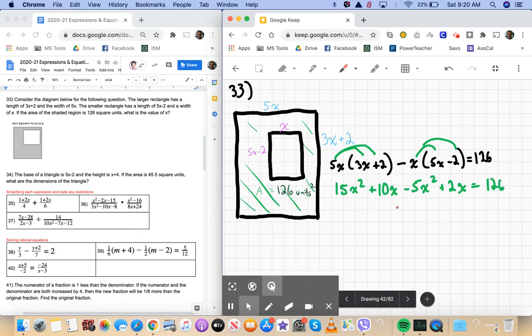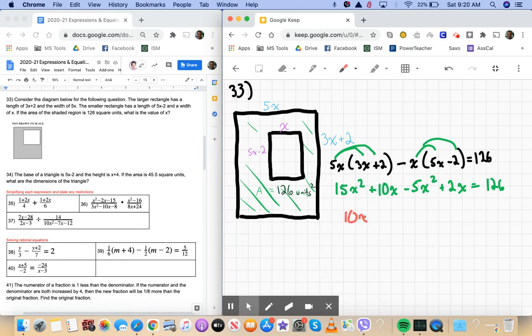Now, like we always do, we're going to combine the like terms and then set it equal to 0. So I've got 15x squared, and then I'm subtracting 5x squared, so that leaves it with 10x squared, right? I've got 10x and 2x, so that's just plus 12x, and then I subtract 126 from both sides, and then that will set it equal to 0.